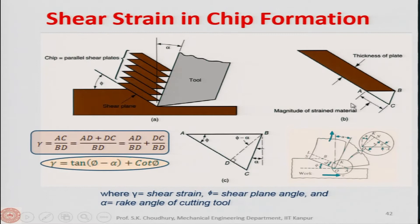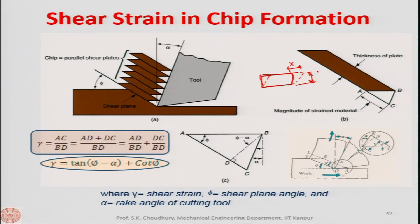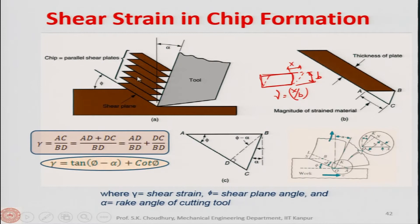Shear strain in chip formation can be found as follows. Shear strain is x/B where x is the deformation and B is the thickness. In metal cutting, the chip flowing along the rake face is modeled as being segregated into slices — like a stack of playing cards — where each slice has the same thickness.